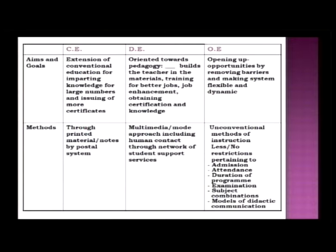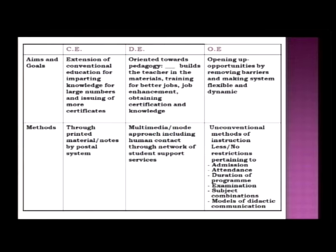In open education, the broad areas to consider include instruction — whether you use one medium or more — and admissions: whether there is an entrance test, entry qualification limitations, or open access for everybody. Duration is another variable — how many examinations a student can take, and how many subject combinations are available. Providing a wide basket of courses and asking students to choose according to their interests — that is where openness is applied.